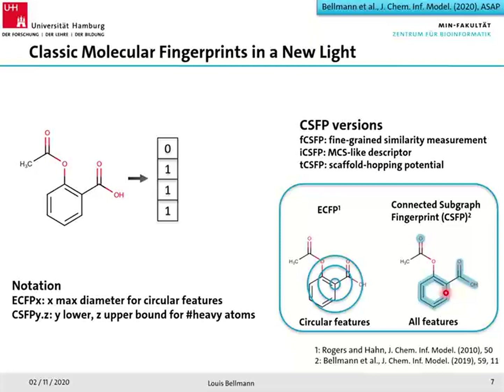Within SpaceLight you have three versions of the CSFP. The default is the FCSFP, which gives a very fine-grained similarity measurement. The ICSFP is more an MCS-like descriptor, where the presence of a chemical feature is tracked but not its chemical surroundings. The third is the TCSFP, which is a little less fine-grained but has a higher scaffold-hopping potential. We use this classic concept of fingerprints but wrap it in a new combinatorial search approach: SpaceLight.